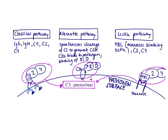Another way to form a C3-convertase is via the alternative pathway. Sometimes C3 gets spontaneously cleaved to generate C3A and C3B. Once C3B settles on the pathogen surface, it can recruit Big B and Big D, and those three molecules together form a C3-convertase.